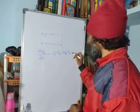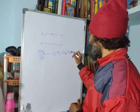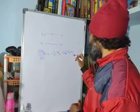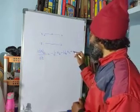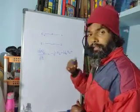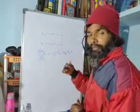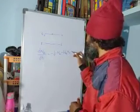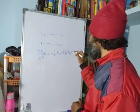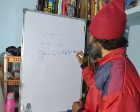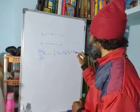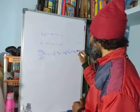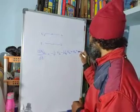Because absorption causes a gain in n2, we add a positive term: plus W12·n1. So the full rate equation is dn2/dt = −(1/τ)·n2 − W21·n2 + W12·n1.